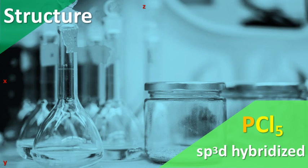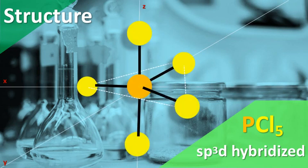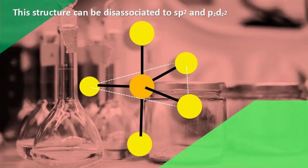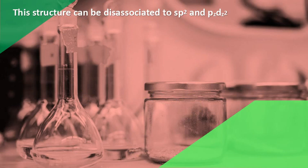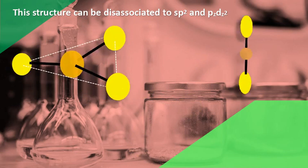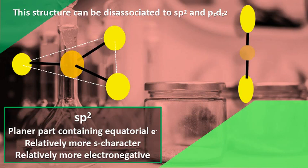PCl-5 is SP3D hybridized with a trigonal bipyramidal structure. This structure can be dissociated into two parts: SP2 and PZ-DZ². The SP2 is the planar part containing equatorial electrons, and the percentage of S-character is more in this case. Therefore, equatorial electrons experience more electronegativity.